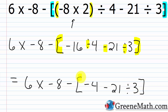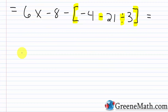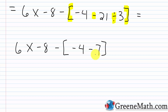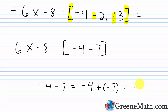Staying inside the brackets, we now have negative four minus seven. Negative four minus seven is the same as negative four plus negative seven. Negative plus negative is negative, four plus seven is eleven. So that's negative eleven. Now outside the brackets we have: 6 × (-8) - (-11).